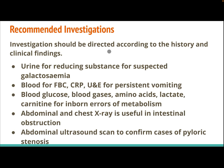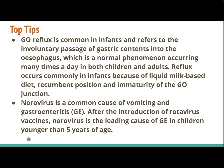Recommended investigations should be directed according to the history and clinical findings. Urine for reducing substances for suspected galactosemia. Blood for complete blood count, C-reactive protein, and electrolytes for persistent vomiting. Blood glucose, blood gases, amino acids, lactate, and carnitine for inborn errors of metabolism. Abdominal and chest X-ray are useful in intestinal obstruction. Abdominal ultrasound scan to confirm cases of pyloric stenosis.